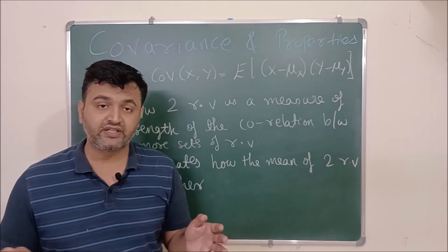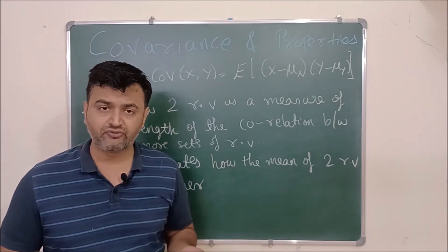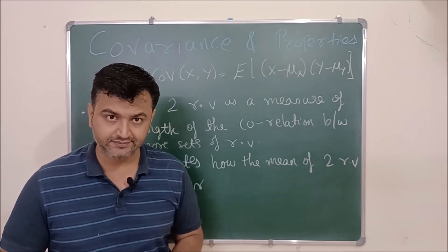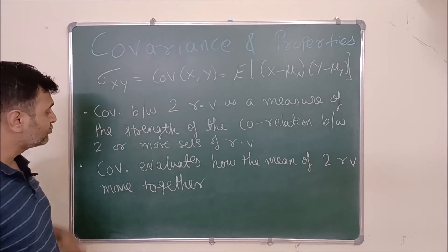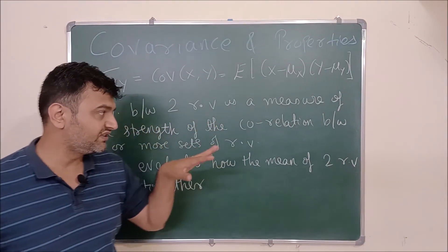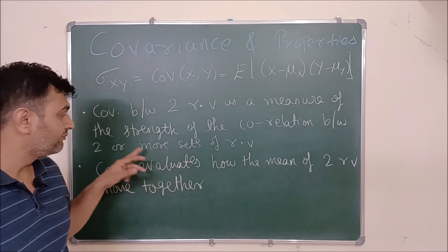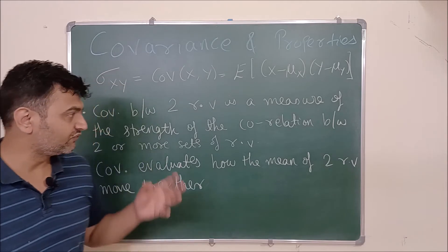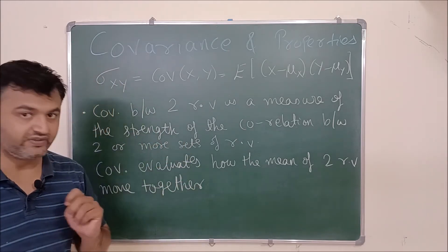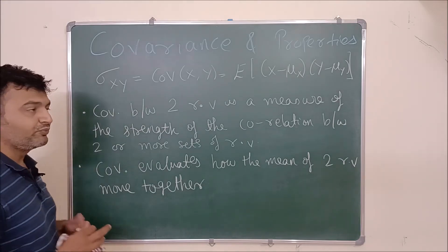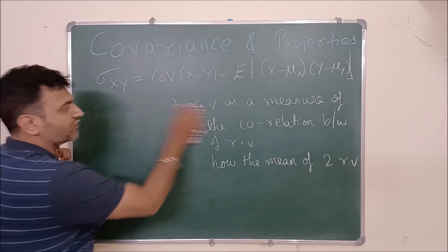Variance measures the distribution of data about a single axis. Covariance measures the distribution of data about two axes because you have two random variables. Covariance between two random variables is a statistical measure of the strength of correlation between two or more sets of random variables. So it gives you the strength of the correlation between those two random variables.